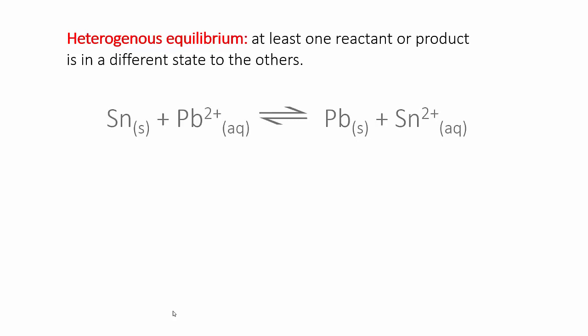One example is in single displacement reactions, such as tin reacting with lead ions. Here the tin is in solid form and the lead ions are aqueous. They would have come from a salt like lead nitrate that was dissolved in water. You may have thought about single displacement reactions as being irreversible reactions that go to completion, but you'll find in this topic that they are in fact equilibria.